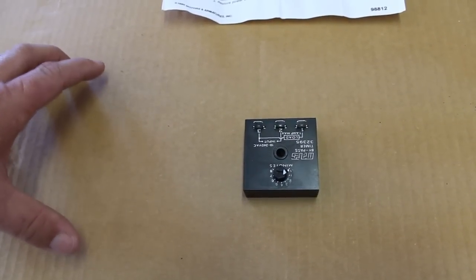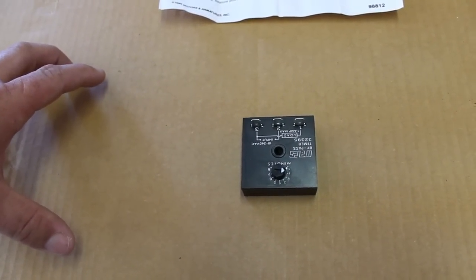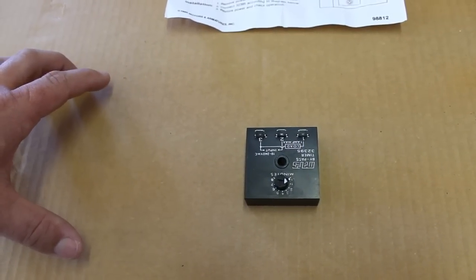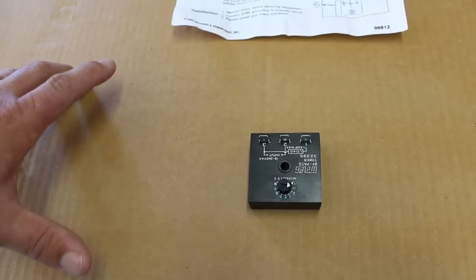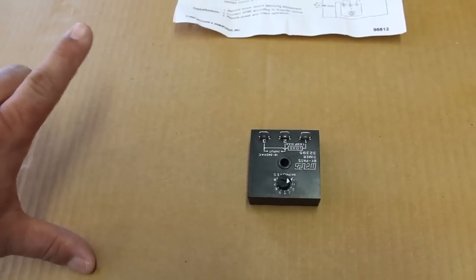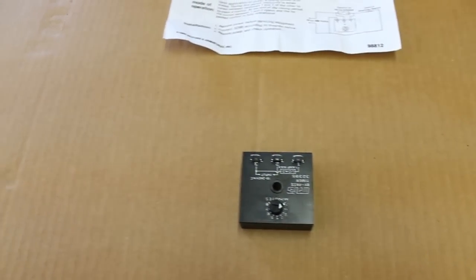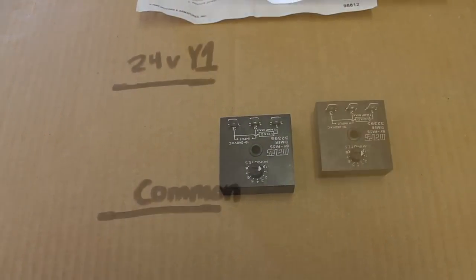We're going to be using our Y1 signal going to the contactor. You can use any 24 volt hot signal that you need for this controller, but for me most of the time it's going to be common and Y1. Let me draw it up and explain how it works.